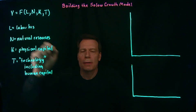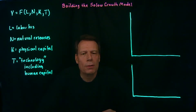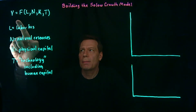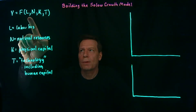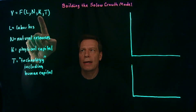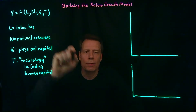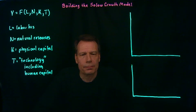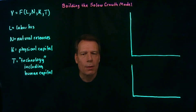Now we have this function, and if we wanted to graph it, we would have to do so in five dimensions — one for Y, one for L, one for N, one for K, and one for T. Of course, we can't graph in five dimensions, so to make progress, we're going to have to hold some things fixed.